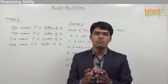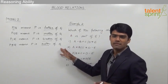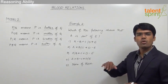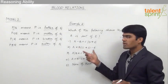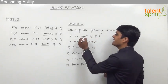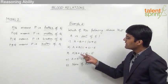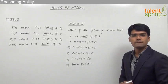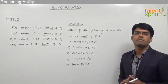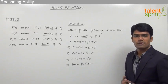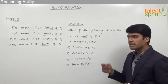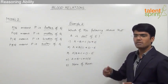Let us now take the second example from model 2. The information is the same, but the question is: which of the following equations shows that A is the aunt of E? This is opposite to example 1 — in example 1, the equation was given and the relationship was to be established. Here, the relationship is already specified and we need to find which equation correctly represents A is the aunt of E.